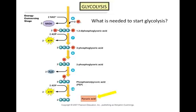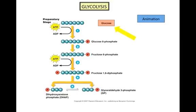In order to start glycolysis, glucose — a six-carbon molecule — is needed. Additionally, two molecules of ATP are needed for the preparatory stage of glycolysis. Pause this video and take a minute to look at the animation of glycolysis on microbiologyplace.com.